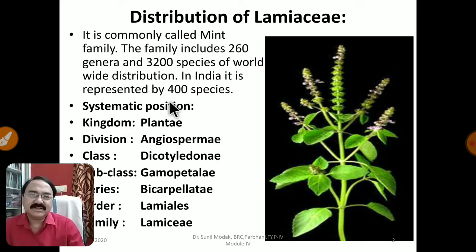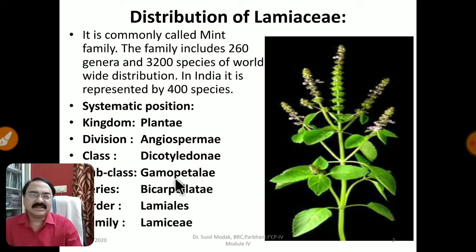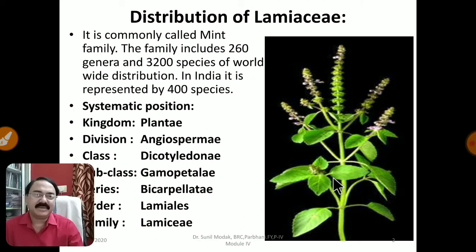You can see here the systematic position of this family. It belongs to Kingdom Plantae, Division Angiospermia, as it produces flowers having the ovary with enclosed ovules. Class Dicotyledonae — tap root system, reticulate venation, pentamerous flowers. Subclass Gamopetalae. We are studying a member of Gamopetalae; up till now we have studied members of Polypetalae. Then series Bicarpellatae — order Lamiales, and then family Lamiaceae.